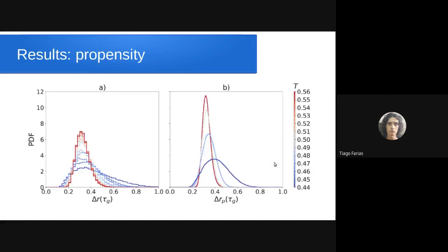Here are the results of the distribution of particles with propensity measured between zero and one with different temperatures. Graph A on the left shows the true propensity obtained by molecular dynamics, and graph B shows the predicted propensity by the neural network.